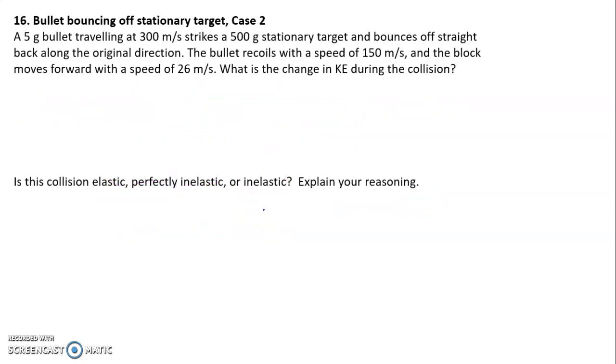Let's look at another case. Here we have a... I think this one's mislabeled. This is supposed to say number 17, but it says 16 again. But in any case, you can see it's a different problem. It starts off pretty similar. The bullet even bounces back with the same speed, but the block is moving forward with the speed of 26 meters per second. And so the kinetic energy initial is 225 joules. See last problem. And kinetic energy final is one-half times 0.005 kilograms times 150 meters per second squared.